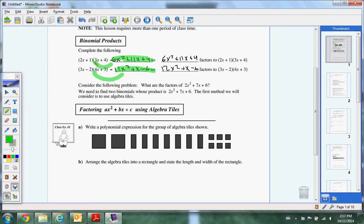In terms of the algebra tiles, we don't spend too much time on these, so let's talk about it briefly here. Write the polynomial expression for the group of algebra tiles shown. So, I have how many x squareds? I have 2x squared plus 1, 2, 3, 4, 5, 6, plus 7x plus 6.